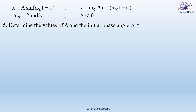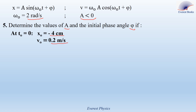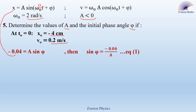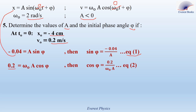Consider the time equations in simple harmonic motion: x equals a sine of (omega0 t plus phi) and v equals x prime equals omega0 a cosine of (omega0 t plus phi). Omega0 equals 2 radians per second, and a is a negative constant. Determine the values of a and the initial phase angle phi, given that at t0 equals 0, x0 equals minus 4 centimeters and v0 equals 0.2 meters per second. Substituting x for t equals 0, we get minus 0.04 meters equals a sine phi, so sine phi equals minus 0.04 over a — equation 1. Substituting v for t equals 0, we get 0.2 equals omega0 a cosine phi, so cosine phi equals 0.2 over omega0 a — equation 2.